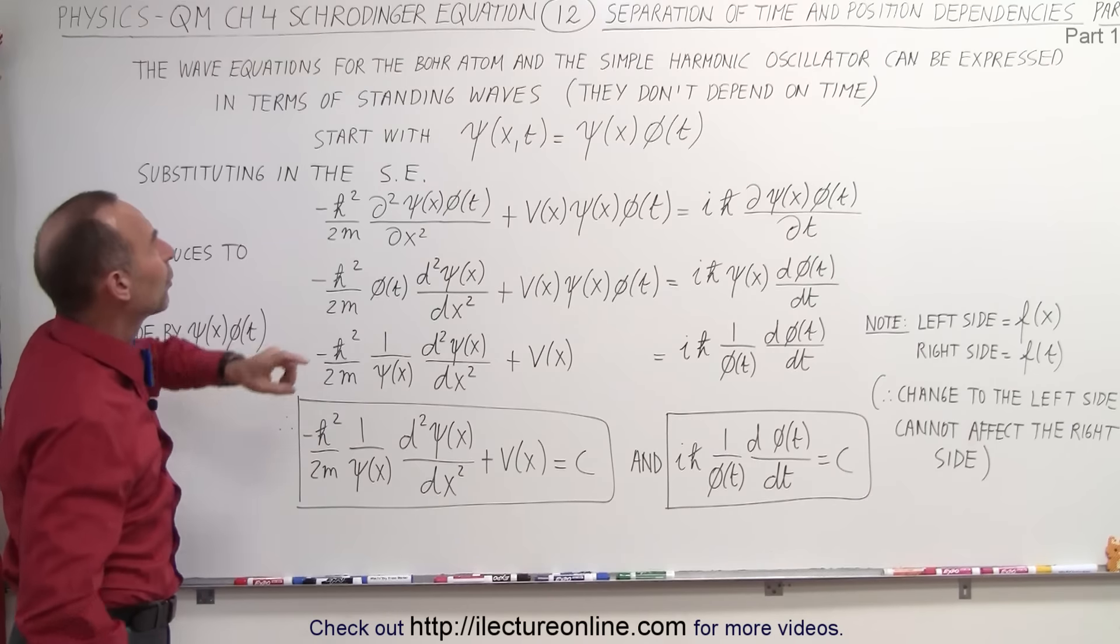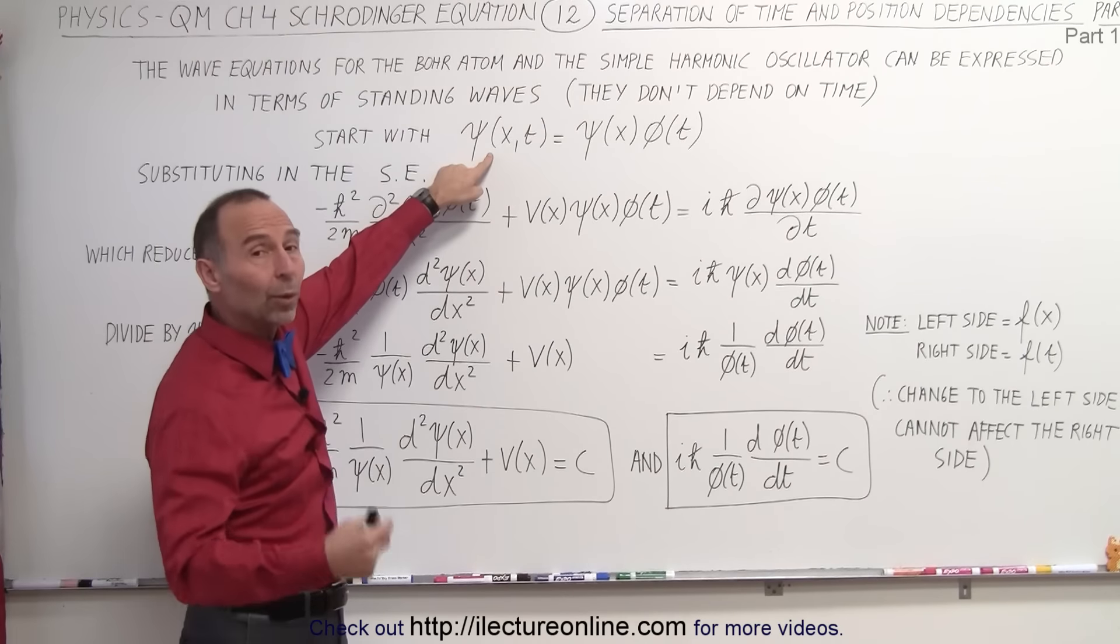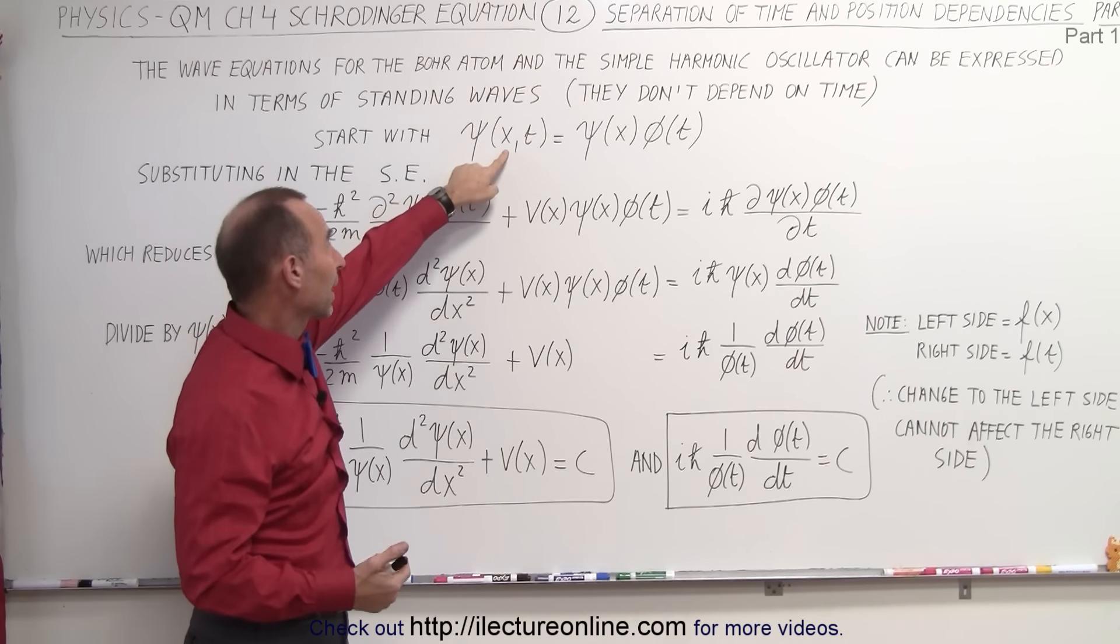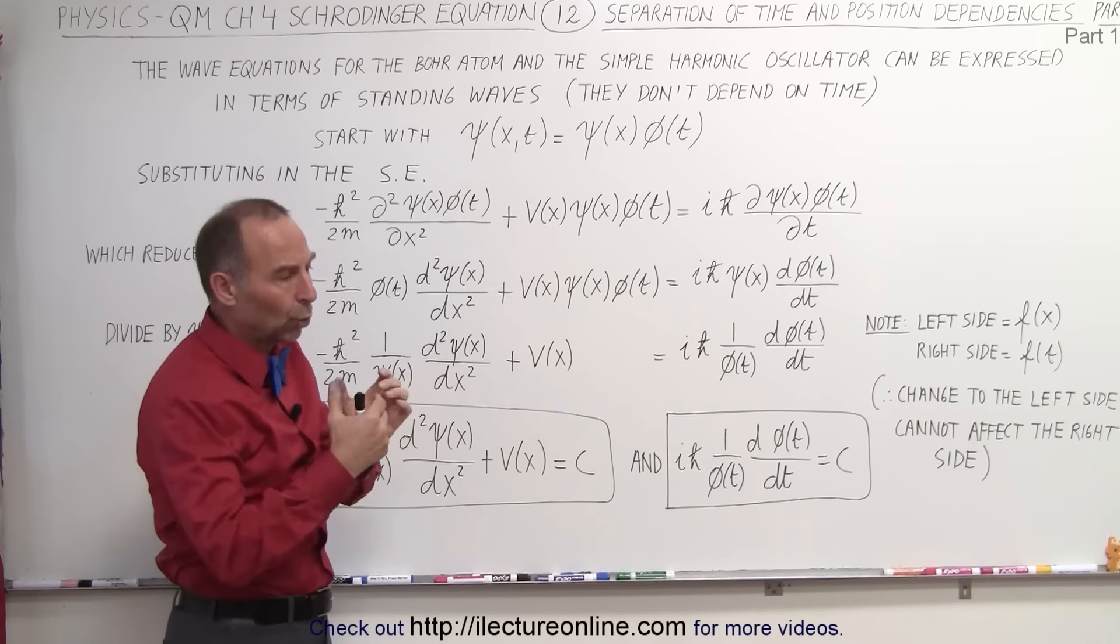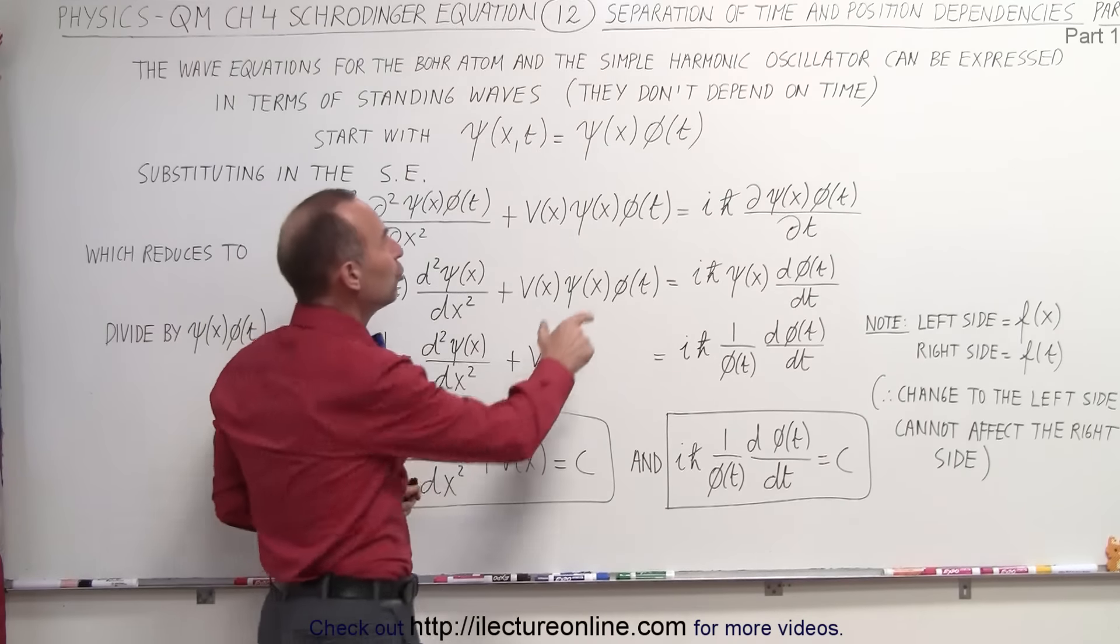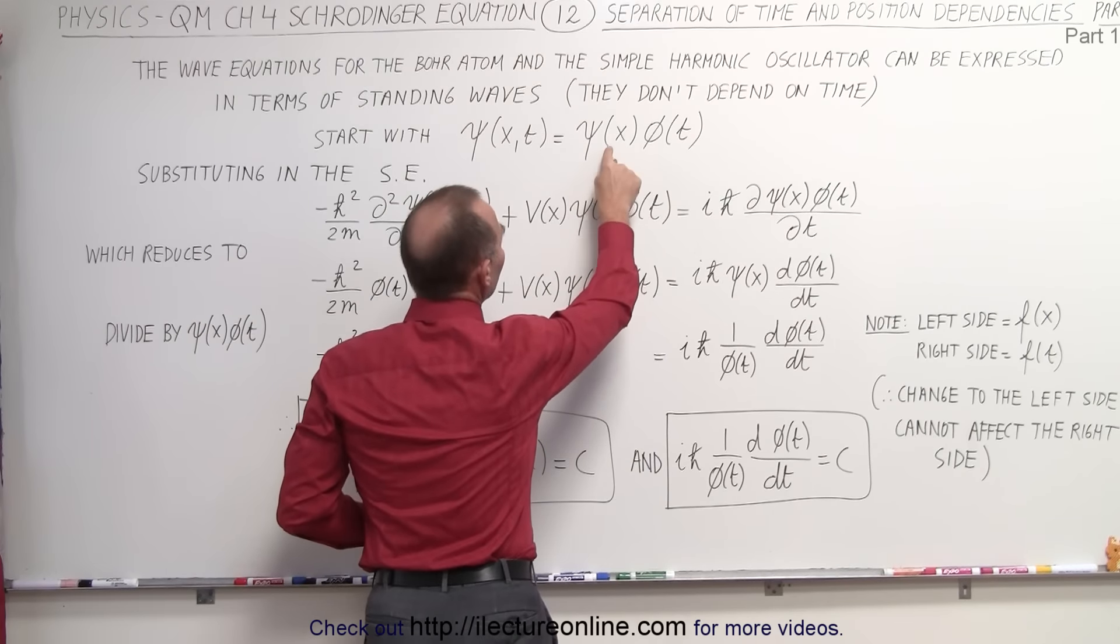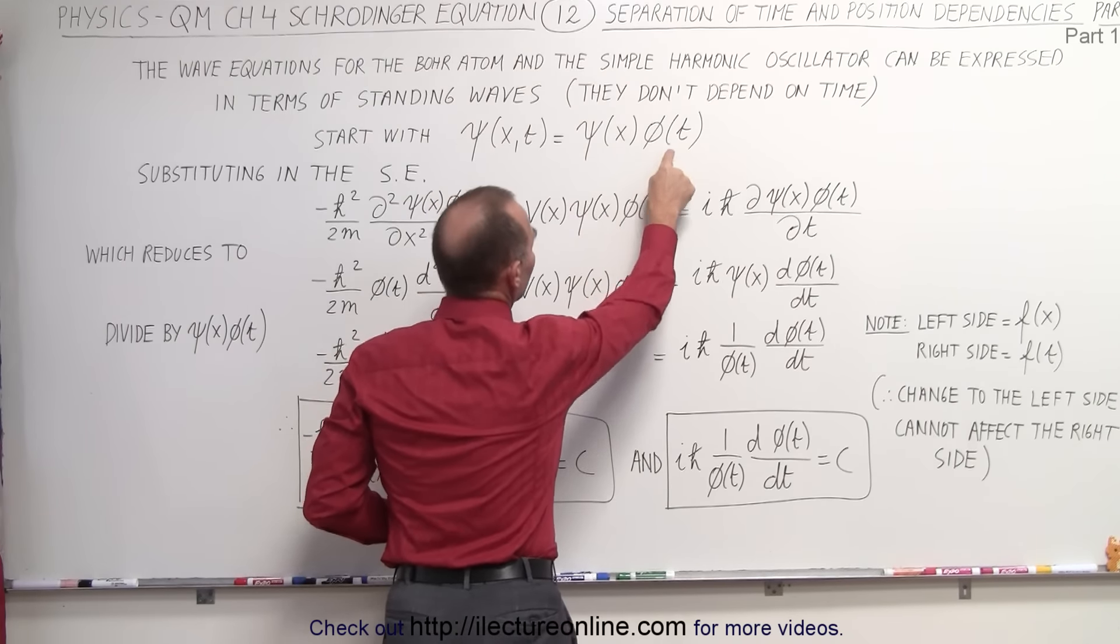So what we're going to do here, we're going to start with the wave equation in one dimension that was dependent on position and time, and separate it or write it as a product of two wave functions, one that's dependent on position and one that's dependent on time.